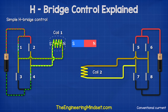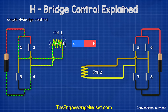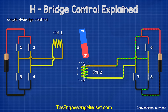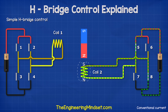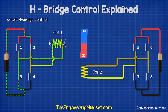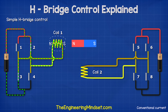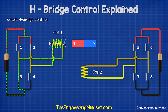if we close switches 1 and 4, coil 1 polarizes, attracting the rotor. Then we close switches 5 and 8, causing the rotor to turn because of the attraction and repulsion of the magnetic fields. Then we close switches 2 and 3 — the polarity has now reversed and the rotor turns.